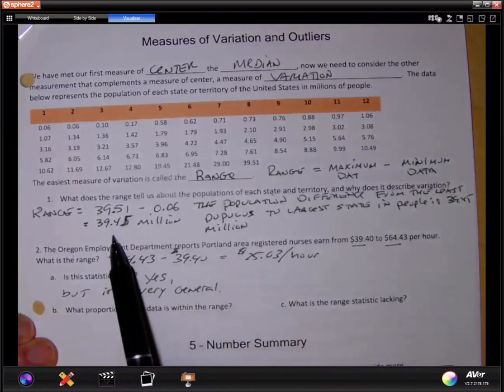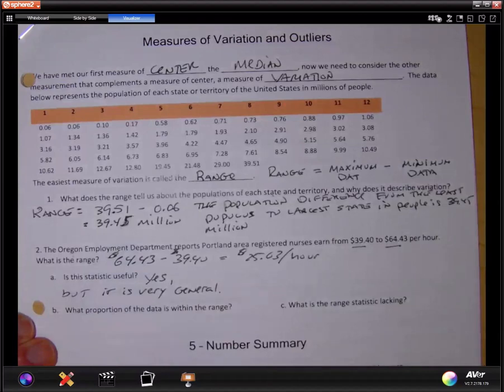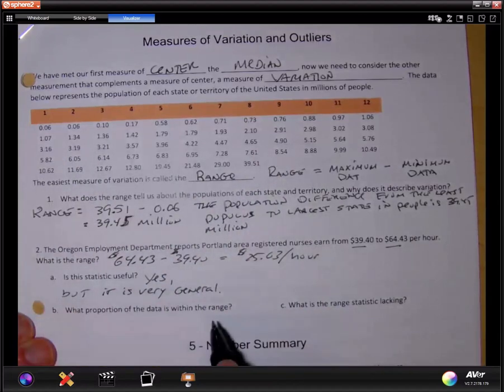The US population per state has a range of 39.45 million. You get the idea that there is a vast difference between the lowest and the highest. But it doesn't tell you anything about what's in between. That's the only thing that's lacking here.